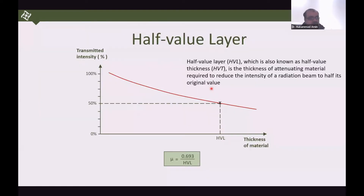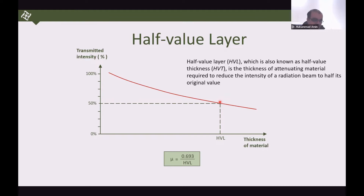If you have 100% beam and you reduce the intensity or the number of photons or the energy of attenuation to half, then how much material is needed? This is the half value layer or half value thickness.